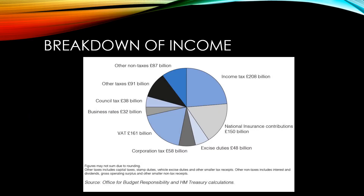This image shows the breakdown of UK government income for the year 2020. You can see that by far the biggest contributors to government income are income tax, VAT and national insurance contributions.